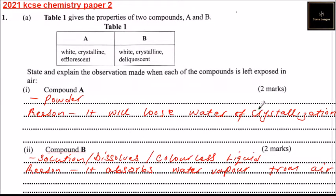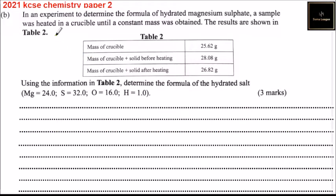Now let's get to Part B of question number one. We are told about an experiment to determine the formula of hydrated magnesium sulfate. A sample was heated in a crucible until a constant mass was obtained. The results are shown in Table 2: mass of crucible is 25.62 g, mass of crucible plus solid before heating is 28.08 g, and mass of crucible plus solid after heating is 26.82 g.